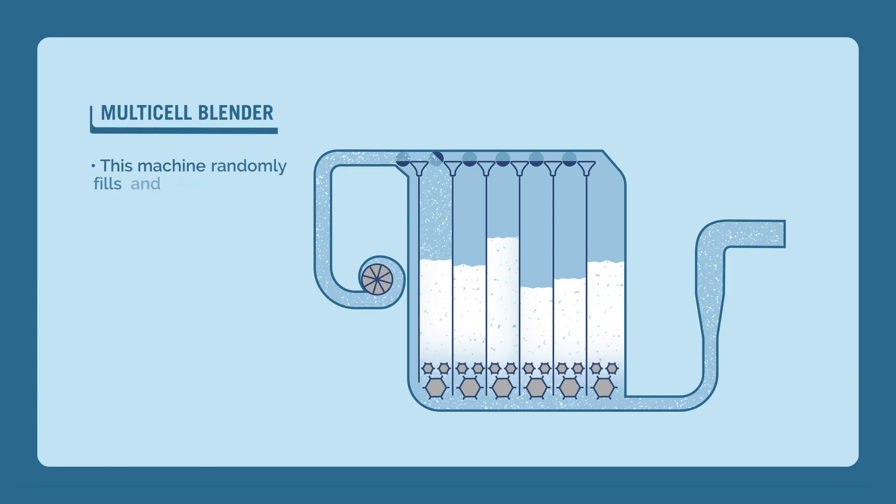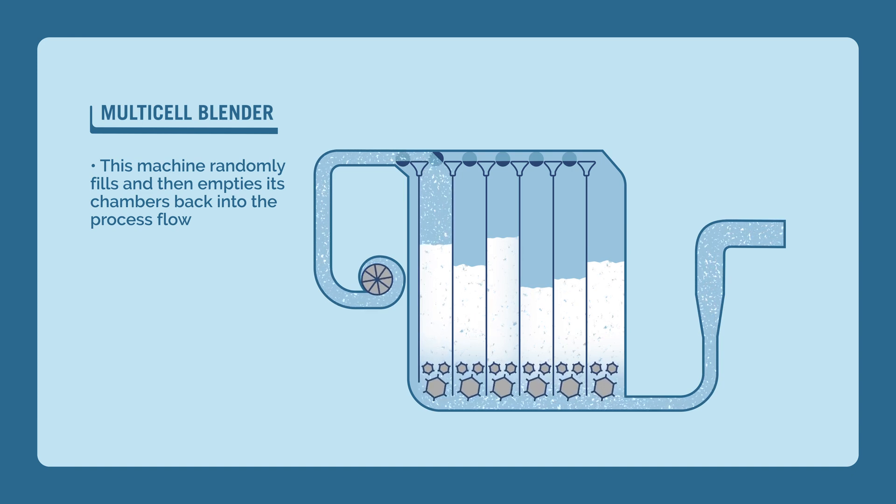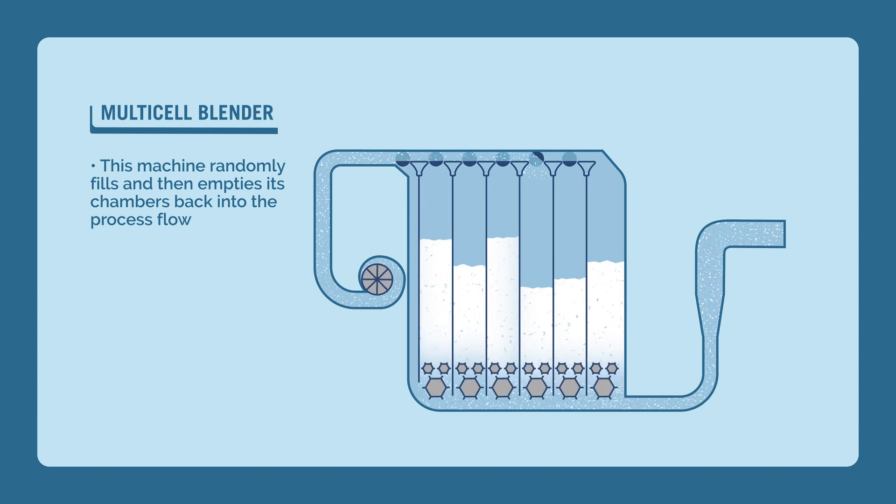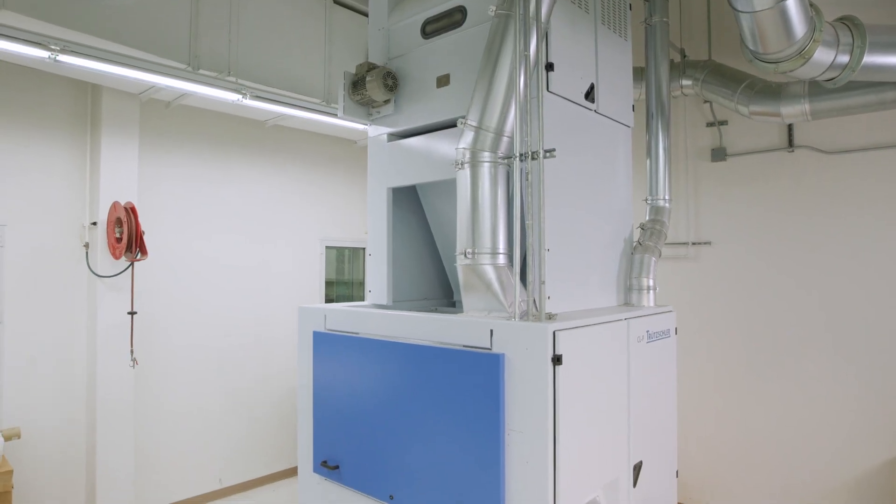To further ensure good blending, a multi-cell blender may be used. This machine randomly fills and then empties its chambers back into the process flow. From the opening and blending processes, the open fiber tufts are transported to the first of what may be multiple cleaning machines or steps.